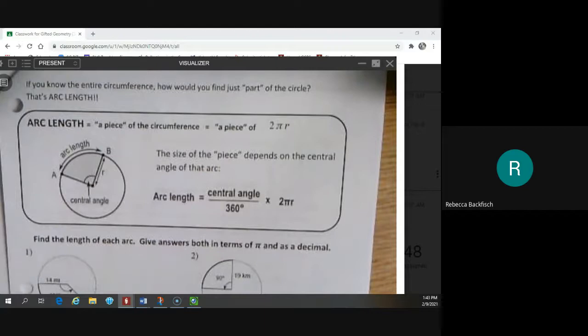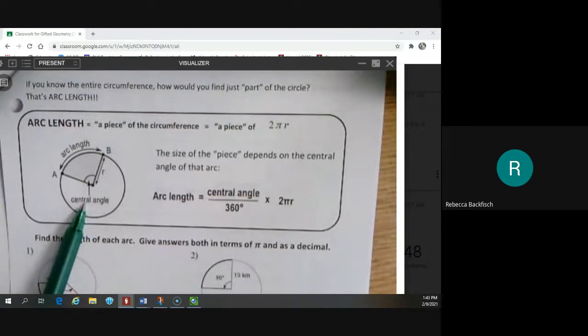And remember, I said that's different from arc measure, which would be degrees. So arc measure would be like if my central angle is 70 degrees, my arc measure is 70 degrees. This is more like centimeters or inches or feet.